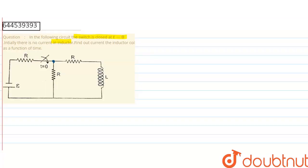In the following circuit, the switch is closed at t equal to zero — when the time is zero. Initially there is no current in the inductor. Find out the current in the inductor coil as a function of time. So first of all, we have to understand the diagram.